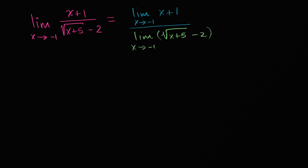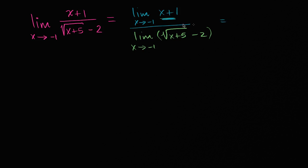Our first reaction might be to use our limit properties. This is going to be the same thing as the limit as x approaches negative one of x plus one, over the limit as x approaches negative one of the square root of x plus five minus two. The numerator x plus one is continuous everywhere, especially at x equals negative one, so to evaluate this limit we just evaluate the expression at x equals negative one.